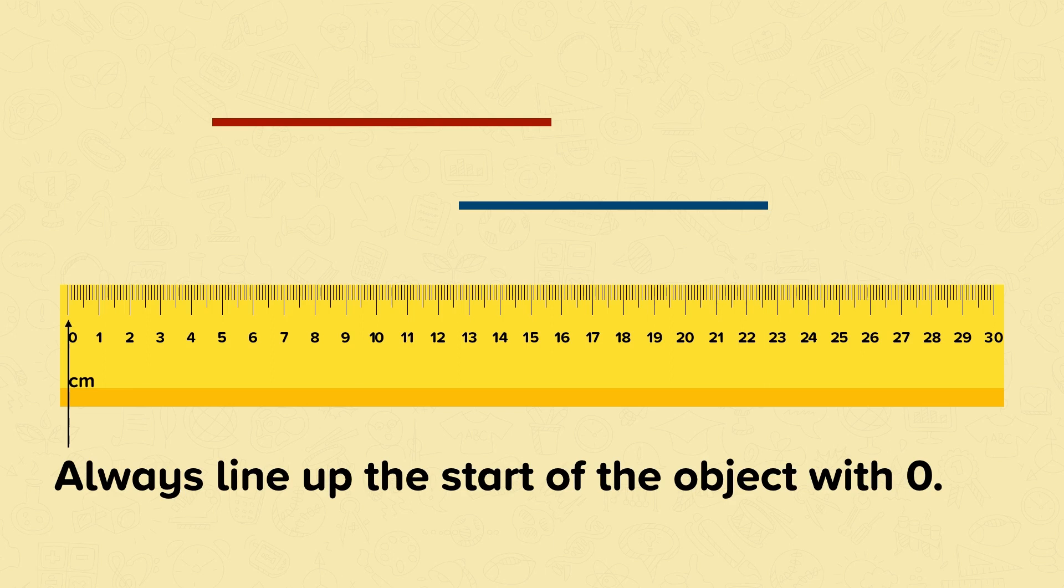We're going to start by measuring the red line. So, we line it up with the ruler to make sure that the start of the line is at zero.